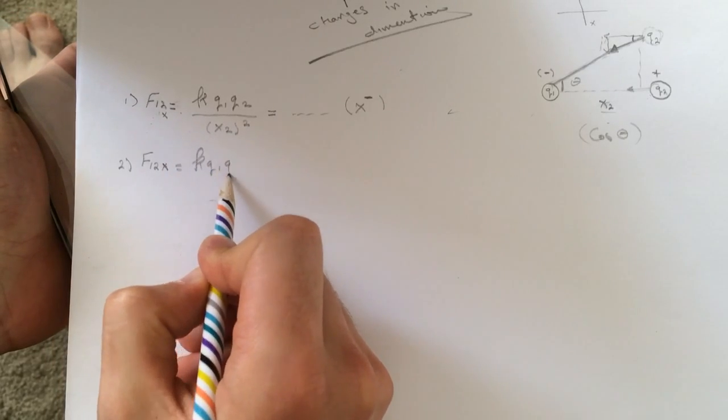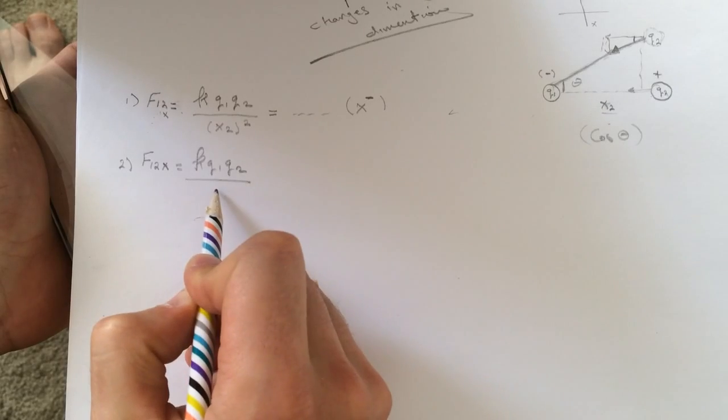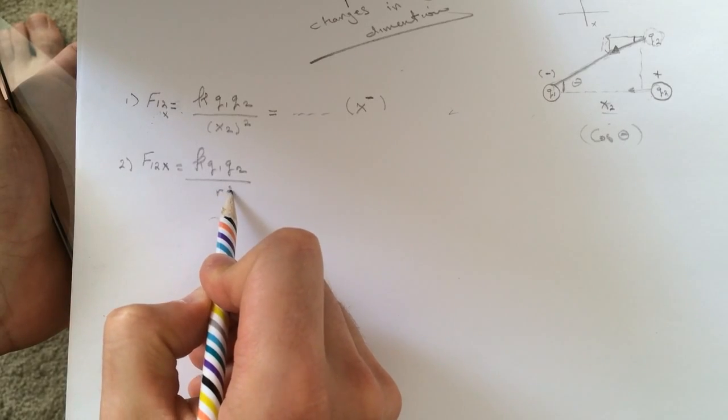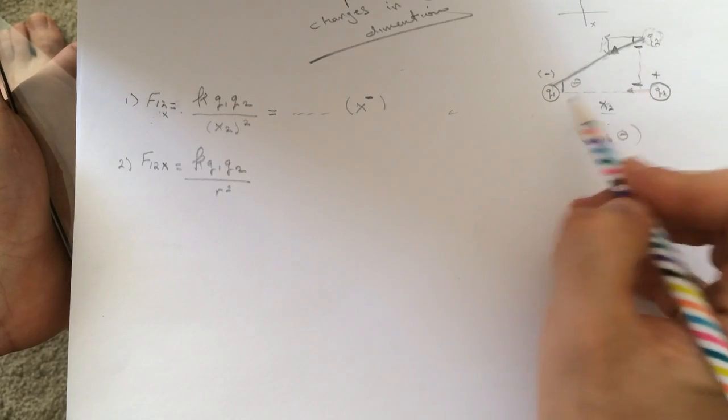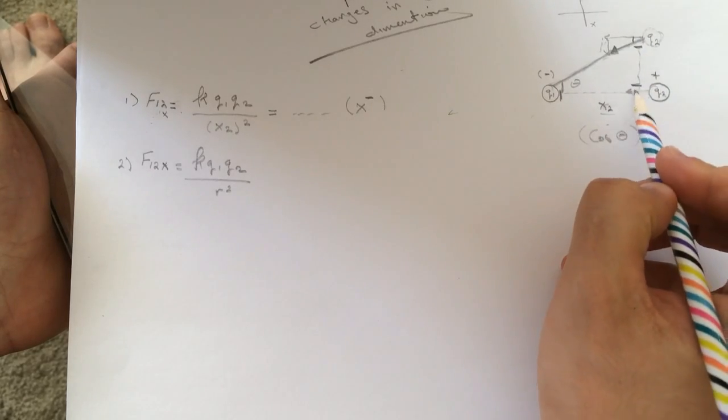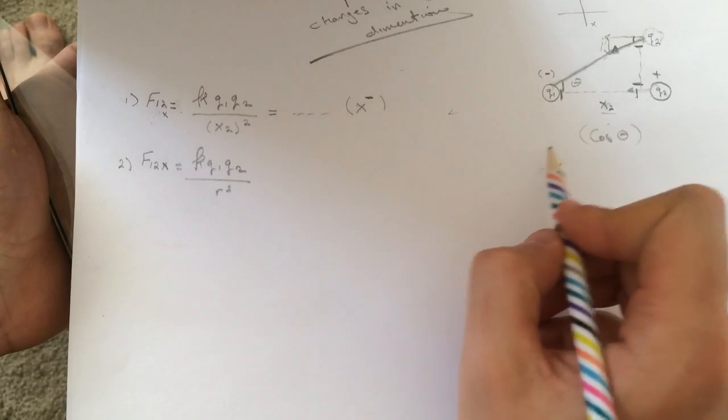k q1 q2 divided by this distance will be r squared and to get this guy we got from here to here right and we got this guy from here to here. Alright so just use the Pythagorean theorem.